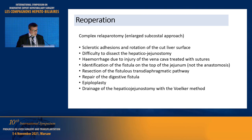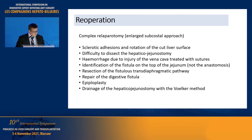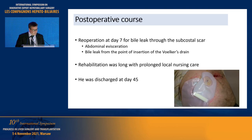A major haemorrhage occurred during dissection due to injury of the vena cava, treated by suture. We succeeded in identifying the origin of the fistula, which was not located on the anastomosis but two centimetres above the anastomosis, and there was no stricture. This explains how the bronchobiliary fistula occurred. The fistula's transdiaphragmatic pathway was resected and the digestive fistula repaired.